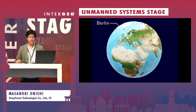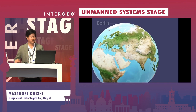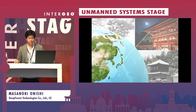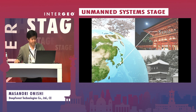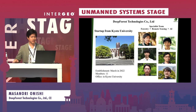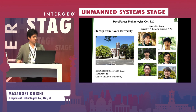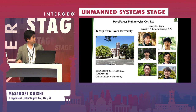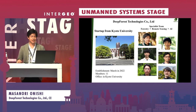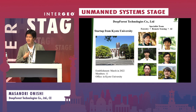We came a long way from Kyoto, Japan — that is the old capital. Our company, D-Force Technologies, is a startup from Kyoto University. We were established last year, and now we have 11 members. Our office is in Kyoto University, and we are a specialist team in forestry, remote sensing, and AI. My background is forestry.